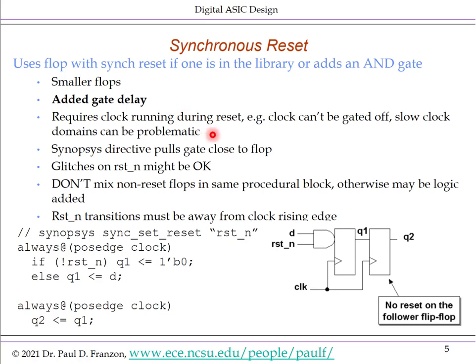Another disadvantage of synchronous reset is that it requires the clock to actually be running during reset. This can be a problem if you have clock gating, which is used to reduce power by turning off a clock when it's not needed. If reset is applied while the clock is gated off, the reset might not occur correctly. One advantage of synchronous reset is that glitches on the reset signal are tolerable if they don't occur near a clock edge.